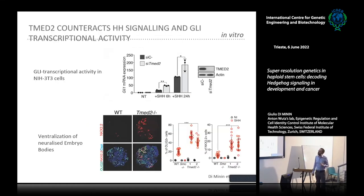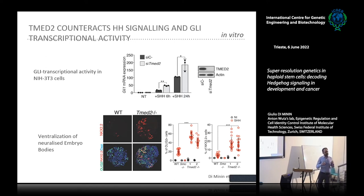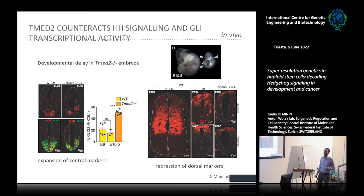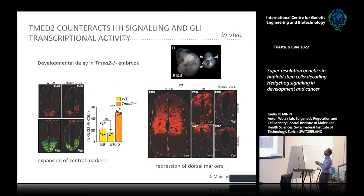In multiple assays, we verified that TMED2 is a negative modulator of the Hedgehog cascade. In fibroblast cells, knockdown of TMED2 increases GLI transcriptional activity. In spinal organoids — which simulate in vitro the patterning events occurring during neural tube specification — TMED2 depletion strongly increases expression of Hedgehog-dependent markers. We also recapitulated this data in vivo by analyzing neural tube formation in wild-type and TMED2 knockout embryos, verifying that TMED2 knockout leads to expansion of ventral domains responsive to Hedgehog signaling and repression of dorsal ones.